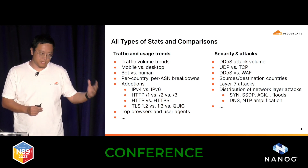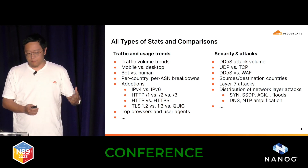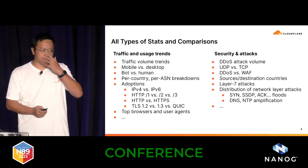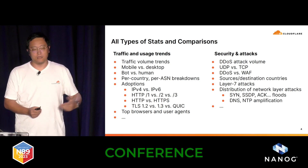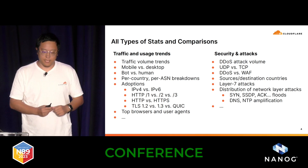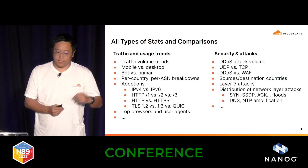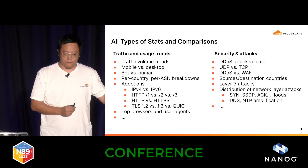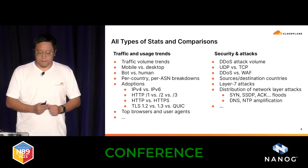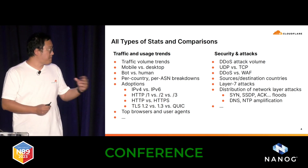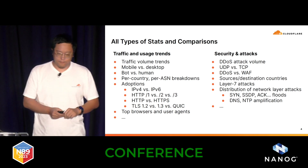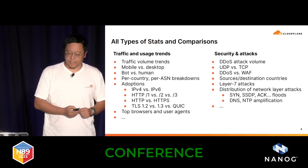So if you see anomalies happening in a given region, a country, a network, or ASN, you can notice that there are outage markers showing up and painting the chart.